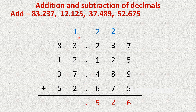Now we add the ones column: 1 plus 3 is 4, plus 2 is 6, plus 7 is 13, plus 2 is 15. We write 5 here and carry 1.